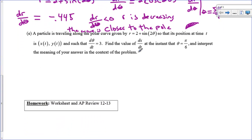Our last question here is a true mix of polar and parametric. I've got a particle traveling along this graph. And its position is given by x(t), y(t). This is a position vector. And it's given that dθ/dt = 3. So θ is increasing at a constant rate of 3. Find the value of dx/dt when θ = π/6. We already know that x = r cosθ. So that is (2 + sin(2θ)) times cosθ.